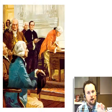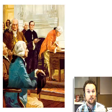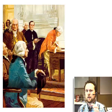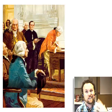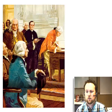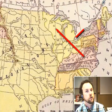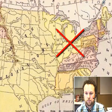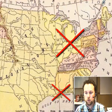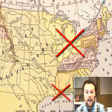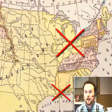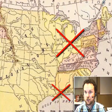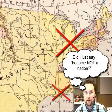Some European countries saw these weaknesses and started to take advantage of them. Great Britain ignored the Treaty of Paris and refused to take its troops out of the Ohio Valley. Spain closed its port in New Orleans to American shipping. Something had to change and fast — otherwise, this very young nation would soon cease to be a nation.